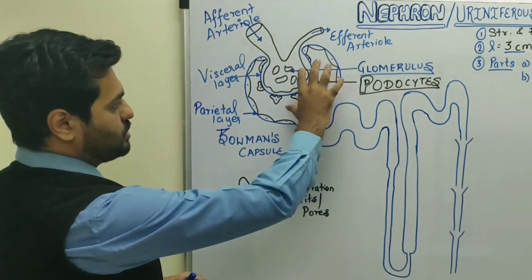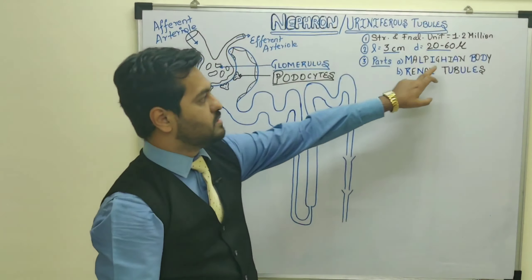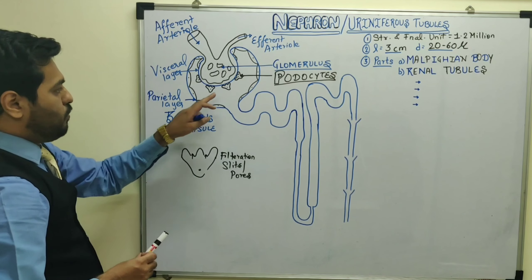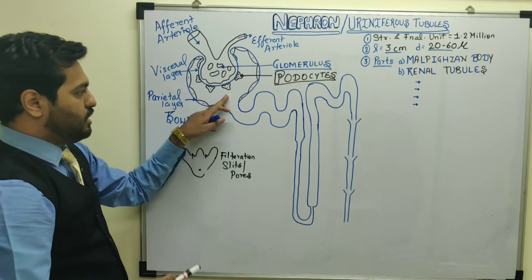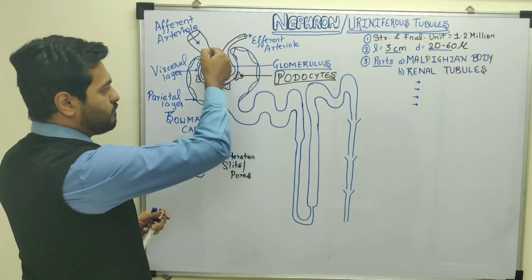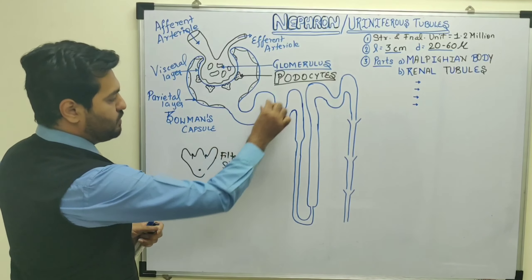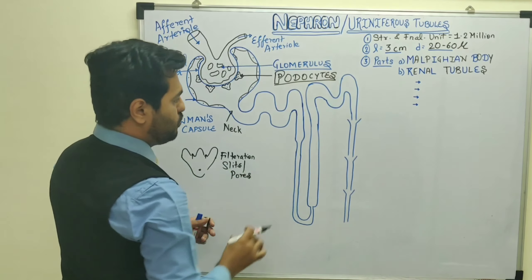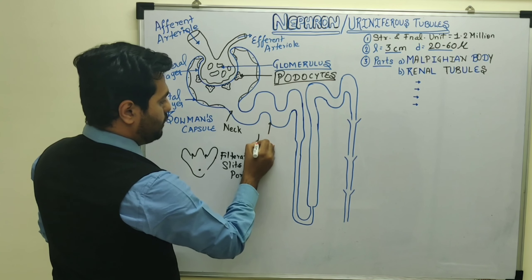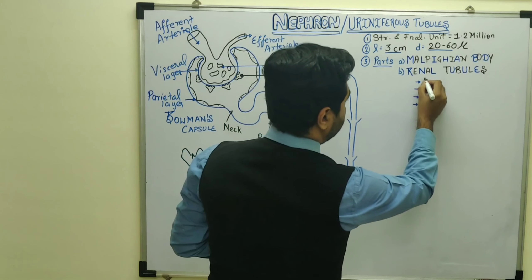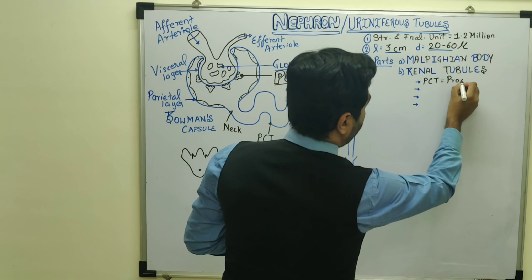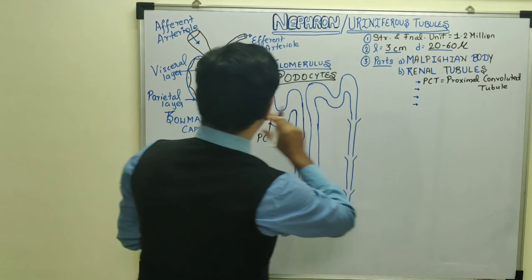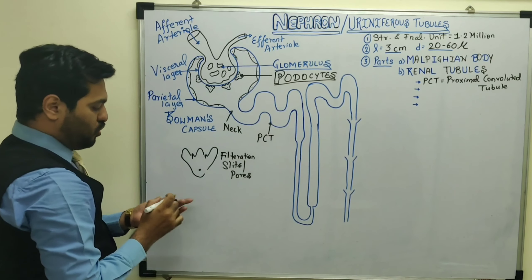This entire structure of glomerulus and Bowman's capsule is called the Malpighian body, or renal corpuscle. Bowman's capsule is considered the proximal and blind end of the nephron because there is no opening — filtrate collects here. When this end opens, that part is considered the neck of the nephron. Followed by the renal tubules, the first part is known as the PCT — the proximal convoluted tubule.